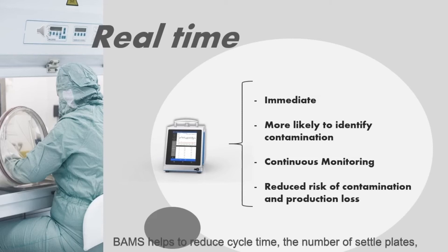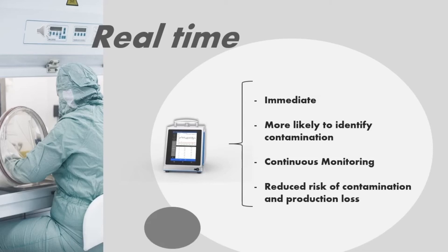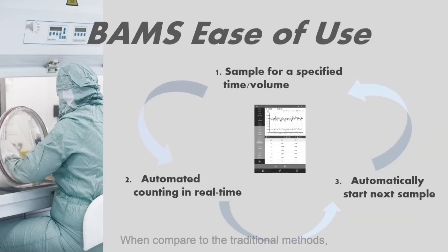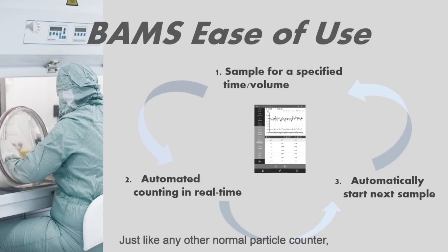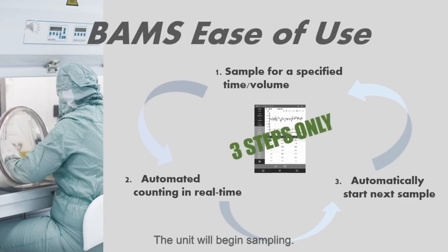BAMS helps to reduce cycle time, the number of settle plates, grab samples, cleaning time, related labor cost, and storage cost by expediting final product release using real-time results. When compared to traditional methods, BAMS is much easier to use. Just like any normal particle counter, users set a specified time or volume for sampling. The unit will begin sampling, then counts are displayed on screen in real time.